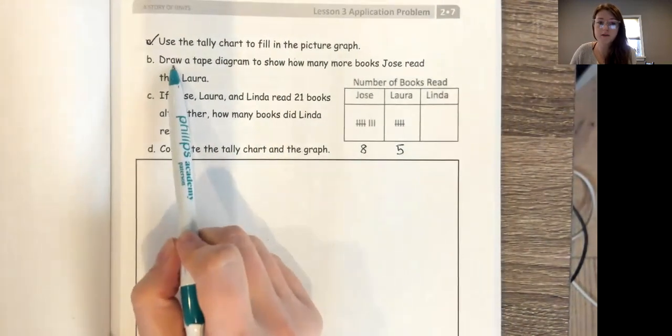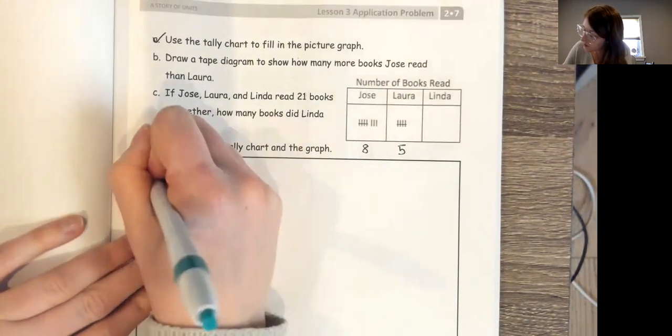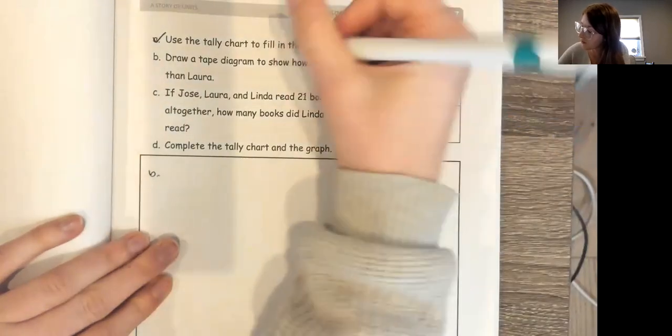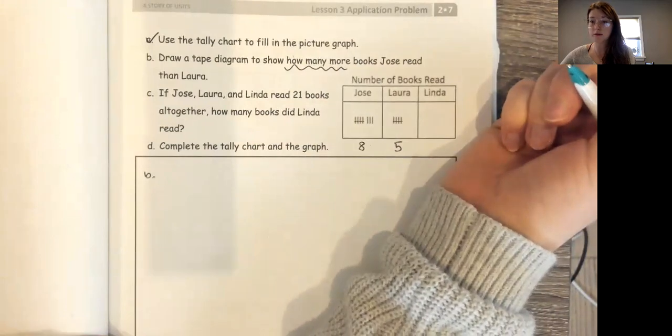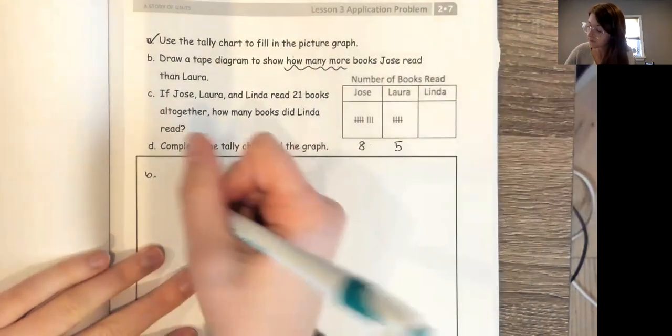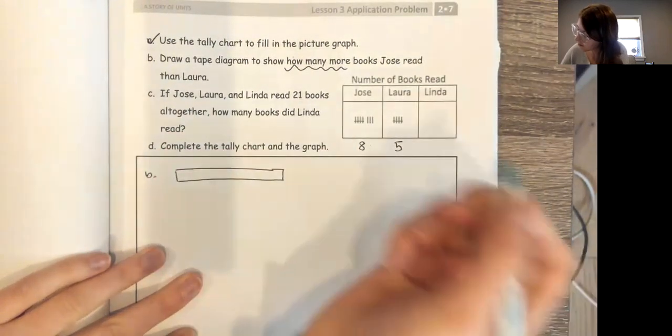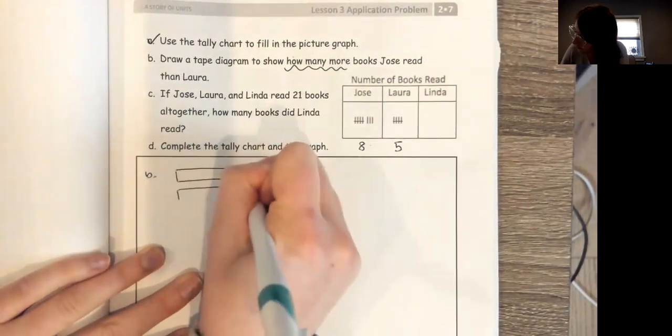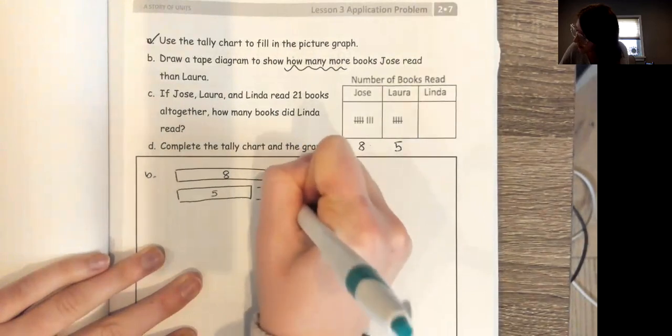So now for B, it says draw a tape diagram to show how many more books Jose read than Laura. So what I'm gonna do is I'm gonna draw my tape diagram to figure out how many more. Remember when you see these words 'how many more,' you know that's a comparison problem. So I know automatically in my head, doing comparison, I have to subtract.